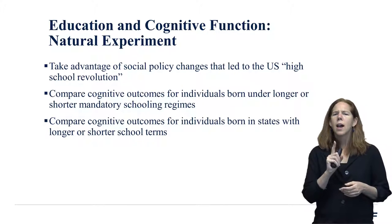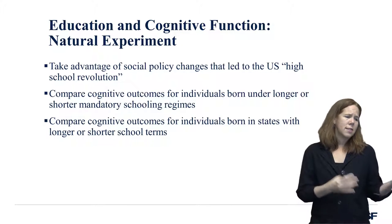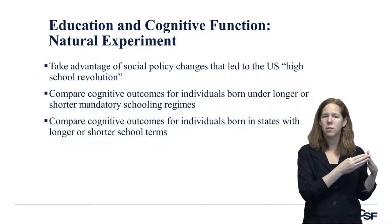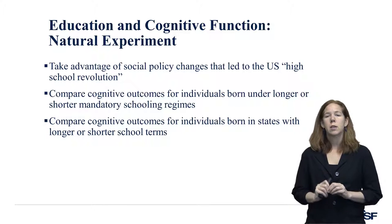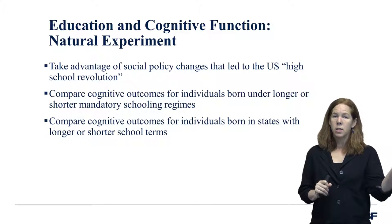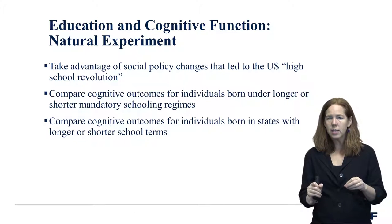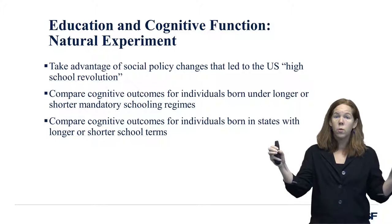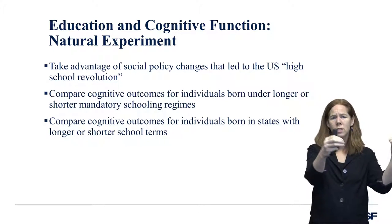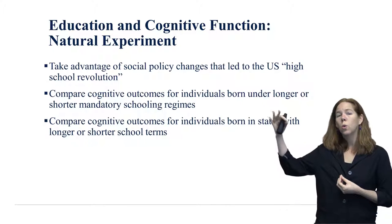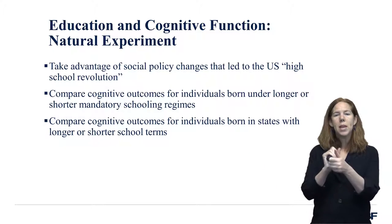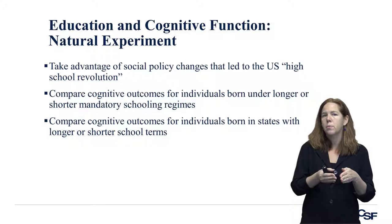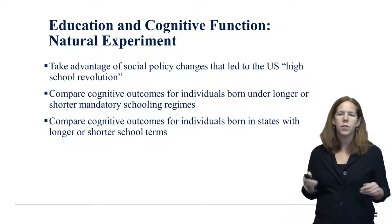You might say: there might be differences between those places anyway — people born in places that don't require much schooling might differ in lots of other ways. That's exactly why we don't just compare people born in South Carolina to people born in Illinois. We compare people born in South Carolina before and after the policy change to people born in Illinois before and after the policy change in Illinois. That way we can control for anything consistently different about South Carolina or Illinois, and also for things that happened nationally over the course of the century. We use these difference-in-differences approaches to identify what's happening around the time of the policy change.